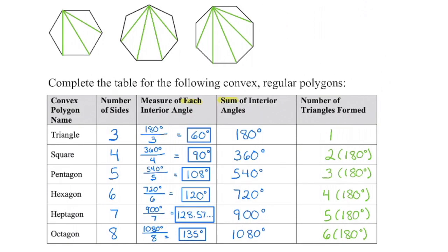Continuing the process with the remaining polygons — breaking each into triangles, multiplying by 180 degrees per triangle to get the total degrees, then dividing by the number of equal angles for regular polygons to get each angle measure — we notice that a pattern emerges.